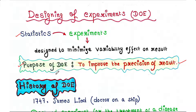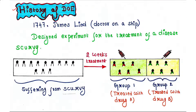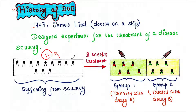Now let's talk about the history of DOE. In 1747, James Lind, who was a doctor on a ship, designed an experiment for the treatment of a disease called scurvy. He found 12 persons on the ship who were suffering from scurvy and selected them for his experiment.